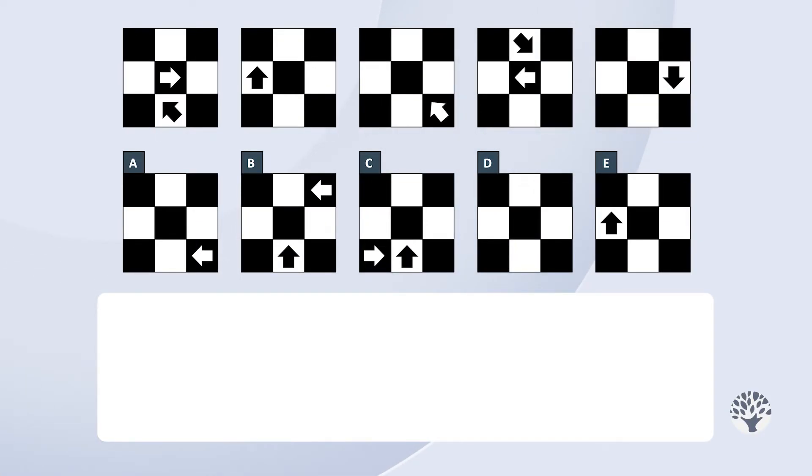We'll start by reviewing the frames at the top. We have a 3x3 grid with alternating black and white squares in each frame. Also there's an arrow in two of the squares in each frame. One of the arrows is white and the other is black.